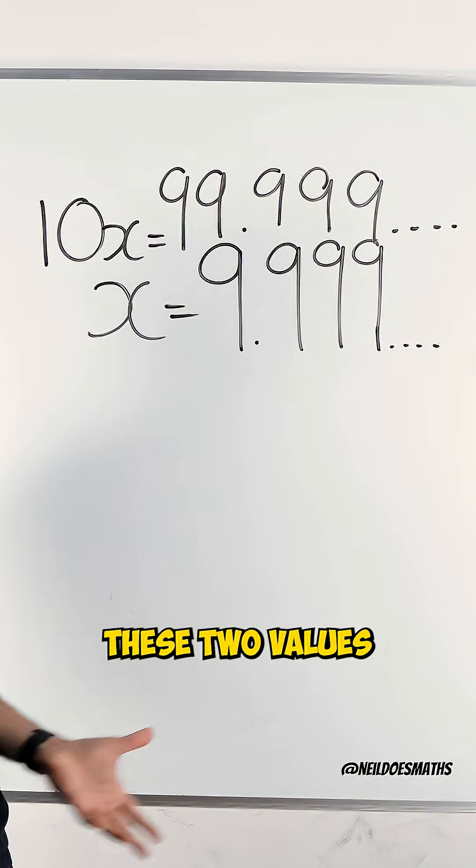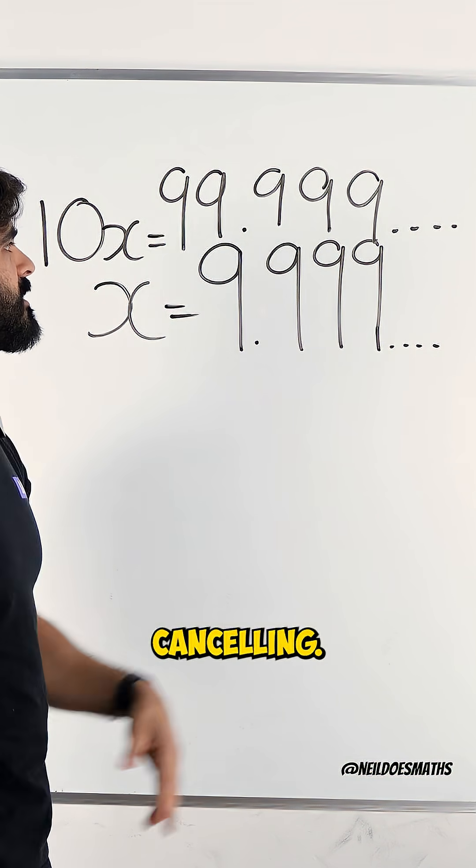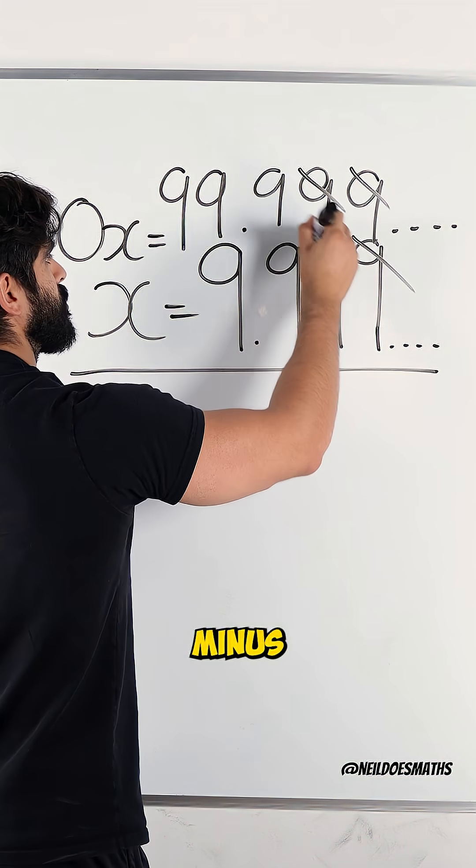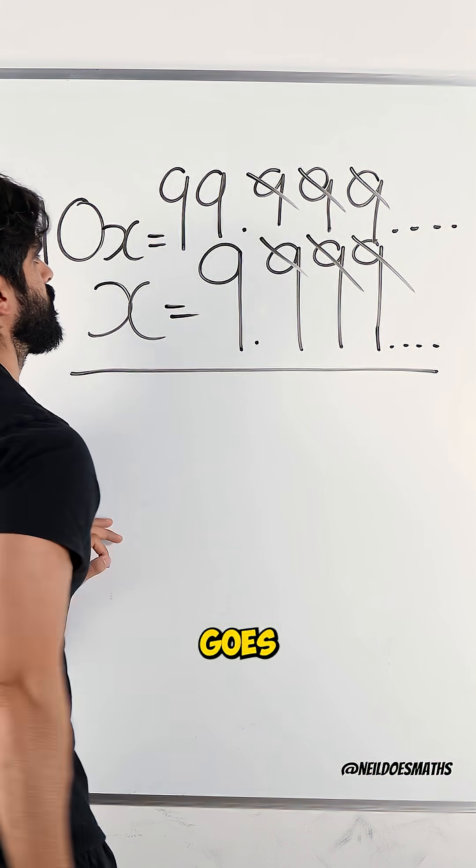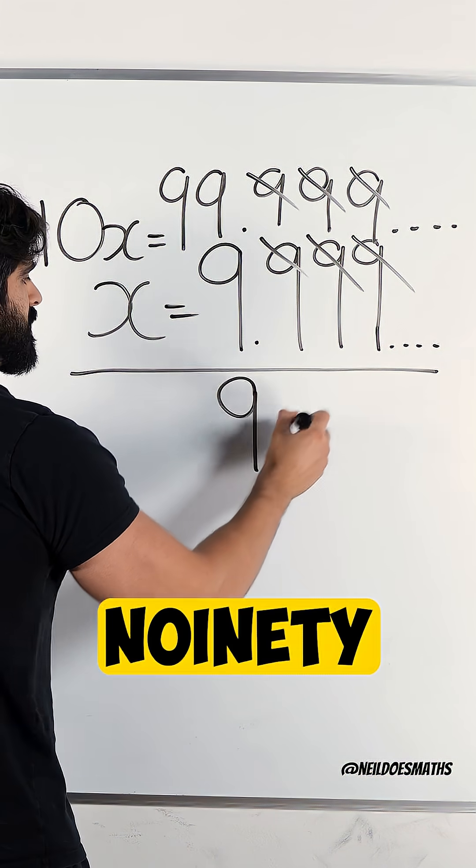Then all we're going to do is subtract these two values. By subtracting them, all the 9s will end up cancelling. 9 minus 9 goes, 9 minus 9 goes, 9 minus 9 goes. Now, here we have to be careful. We have 99 minus 9, which is 90.